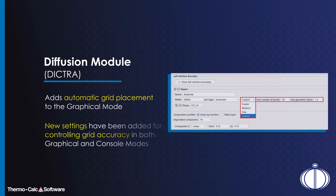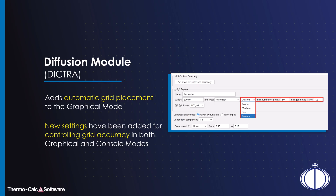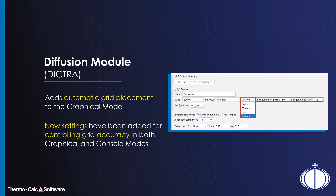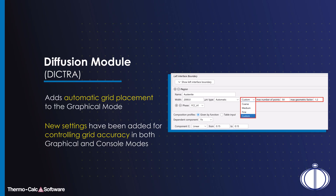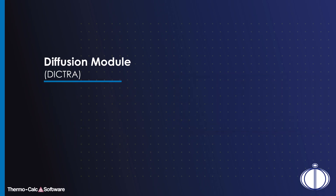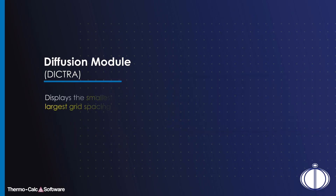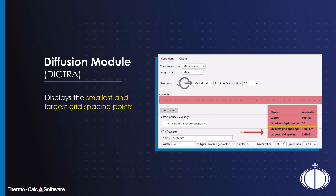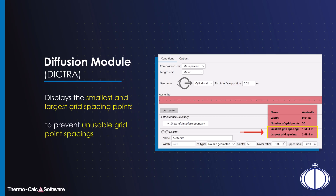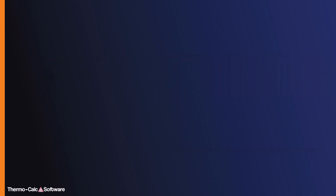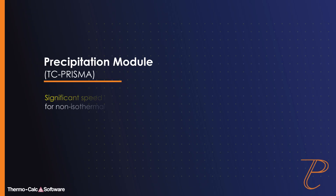The diffusion module Dictra adds automatic grid placement to the graphical mode. New settings have been added for controlling grid accuracy in both graphical and console modes. Additionally, the program now displays the smallest and largest grid spacing points to prevent unusable grid point spacings.